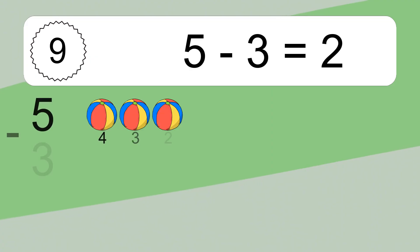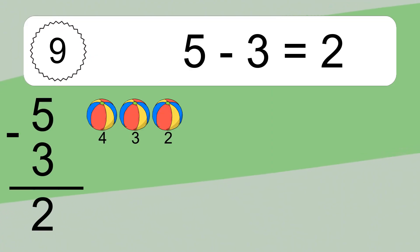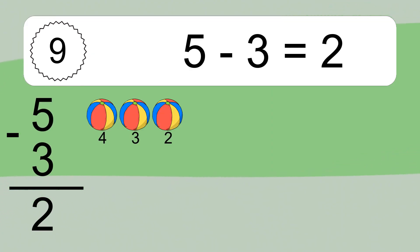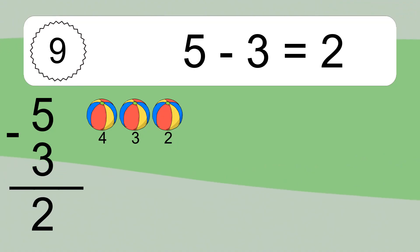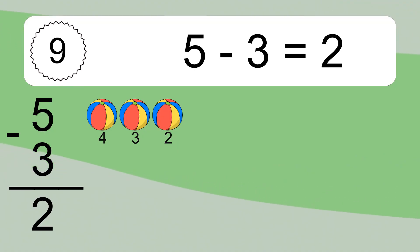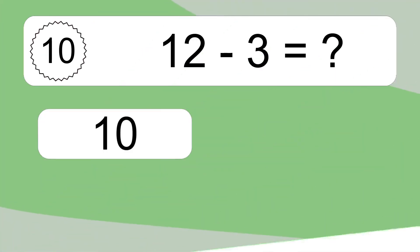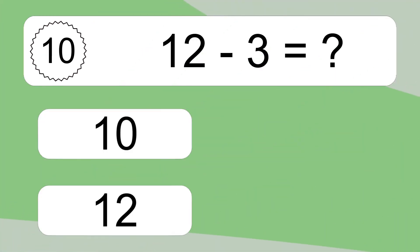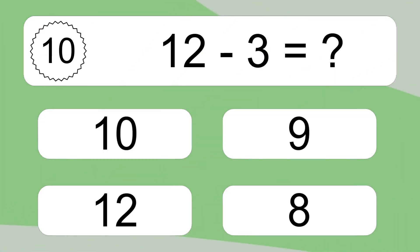5 minus 3 equals 2. Let's count it: 4, 3, 2. 12 minus 3 equals what?